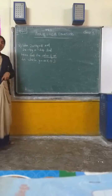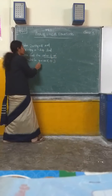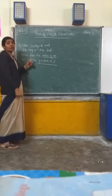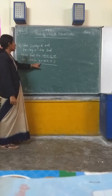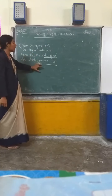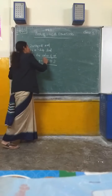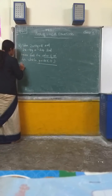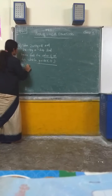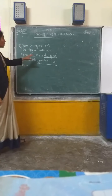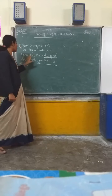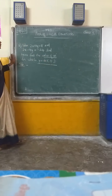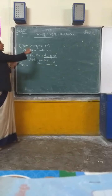The question says: after solving the equations, use the solution to find the value of m for the equation y equal to mx plus 3. So we want to first solve the two equations 2x plus 3y equal to 11 and 2x minus 4y equal to minus 24, and then substitute to find m. We can use the substitution method.